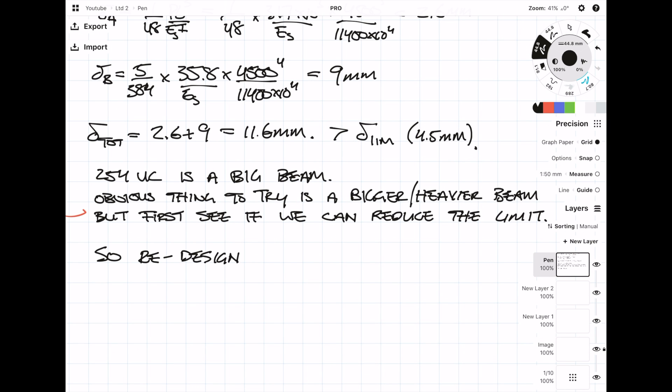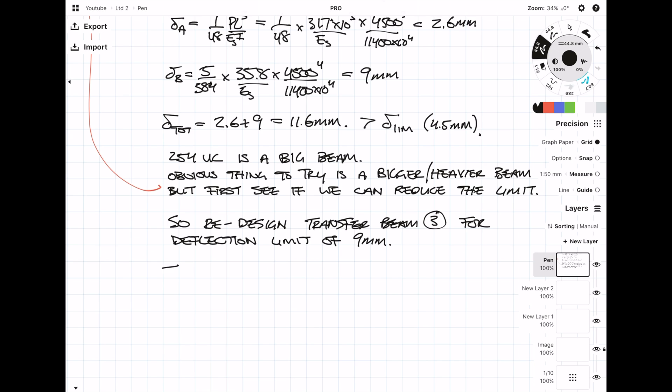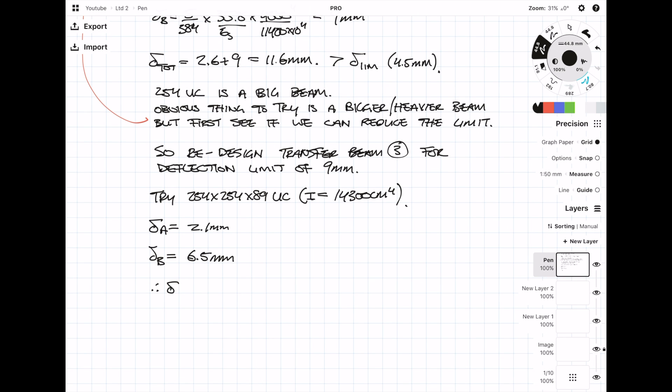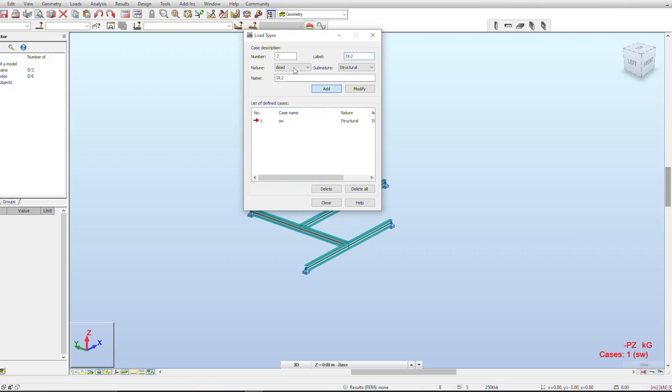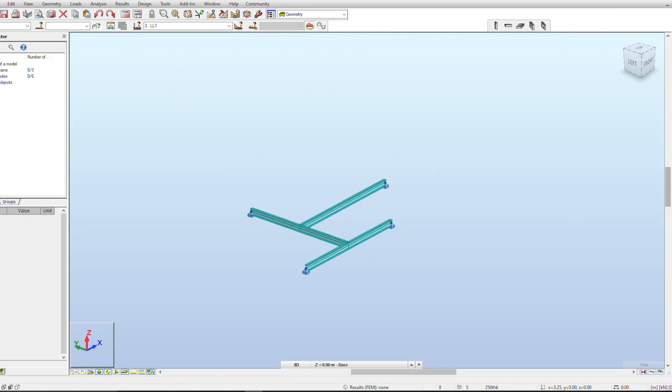Now going back to the second transfer beam, we now need to design the beam for a deflection limit of 9 mm. I'm just going to try the same beam size but just the next weight up. Once I plug the numbers back in, I get a deflection value of 2.1 mm and 6.5 mm. Once I add these together, it comes to 8.6 mm, and this is less than my 9 mm limit. Therefore, the beam size which I've selected is okay.